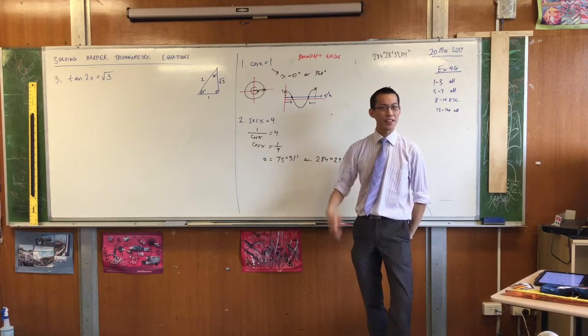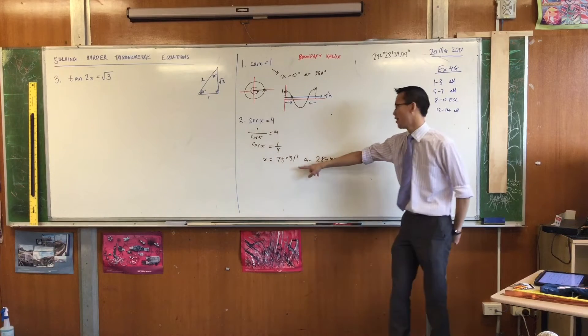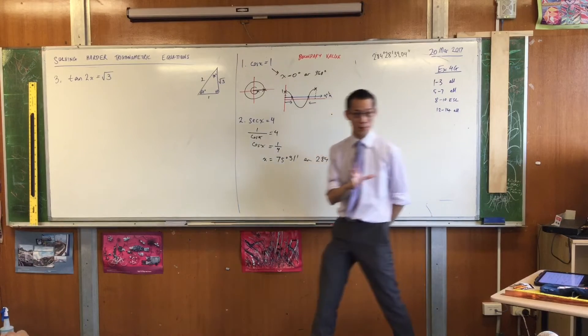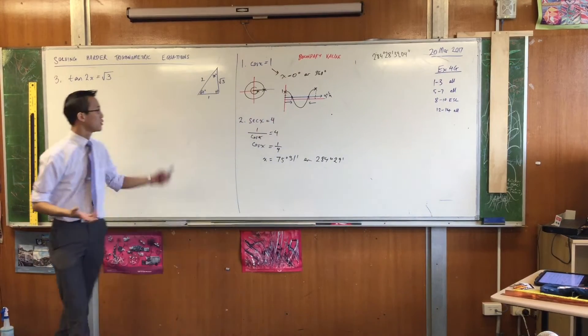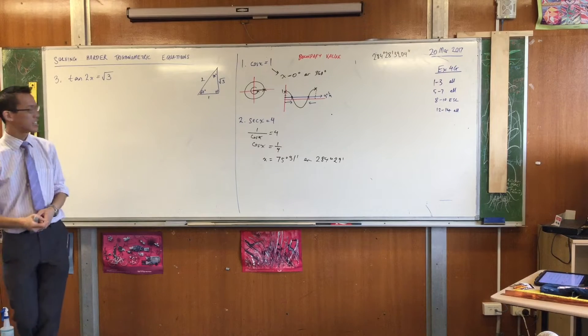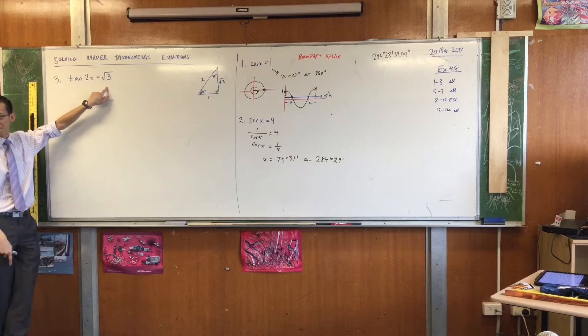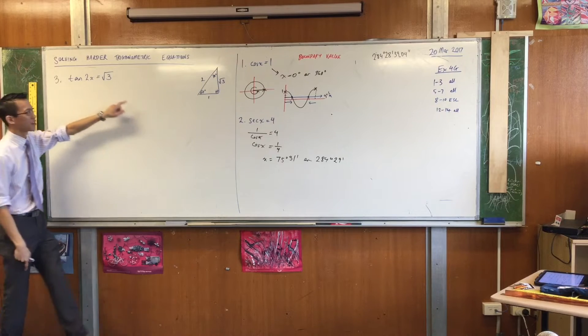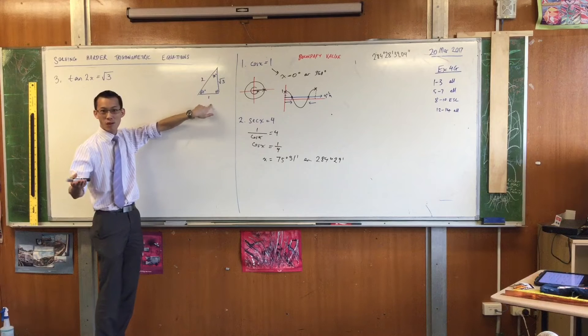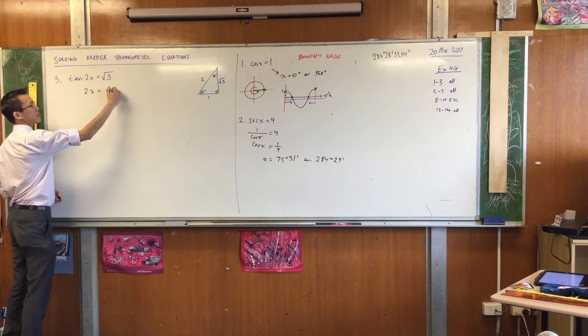tan 2x equals root 3. Now this is, again, another exact value. I'm intending to see if you can muck with it even if you have something messy. This time, that's not what I'm focused on. So I've helpfully included my 1, 2, root 3 triangle to help you recognize which angle is the first angle that will give me a solution to this. It's going to be 60 degrees, right? Because look, tan 60 is opposite on adjacent. That's root 3 on 1.